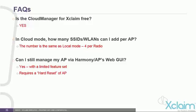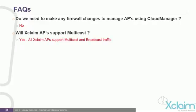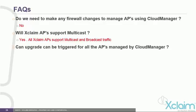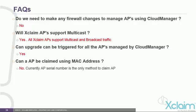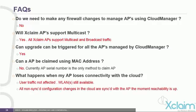Many clients have firewalls between their business and public wireless LAN — do we need to make any firewall changes to manage APs using Cloud Manager? No. Will the Xclaim APs support multicast? Yes, they support both multicast and broadcast traffic. Can an upgrade be triggered for all APs managed by Cloud Manager? Yes. Can an access point be claimed using its MAC address? No, we only need the AP serial number. What happens when my AP loses connectivity with the cloud? The LEDs will be blinking red but user traffic is not affected and wireless LANs remain available. Once internet connectivity is restored, all non-synced configuration changes are synced with the access point immediately.